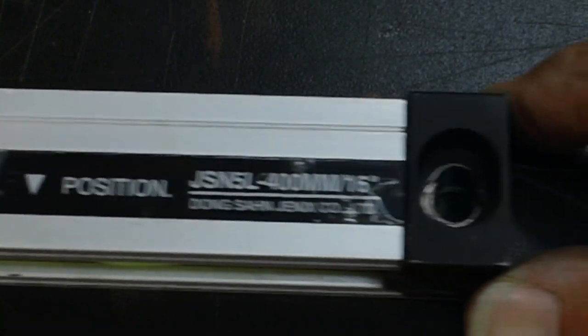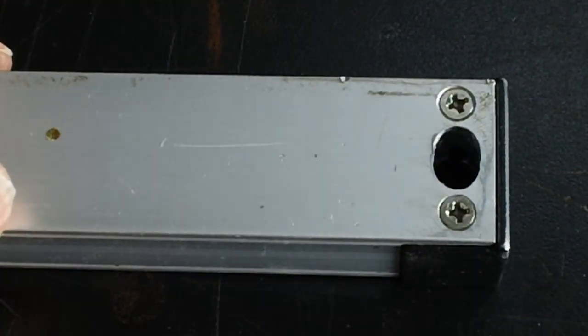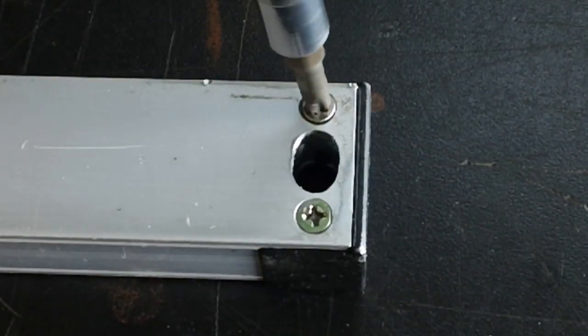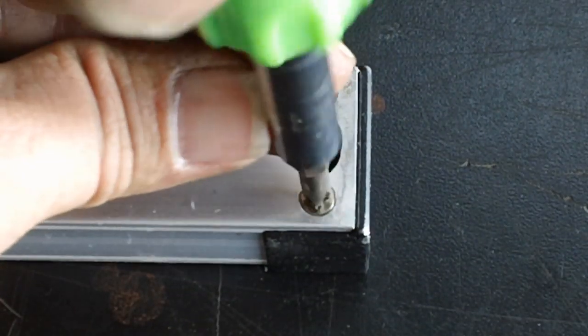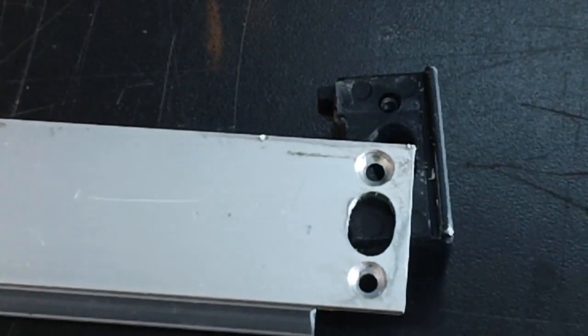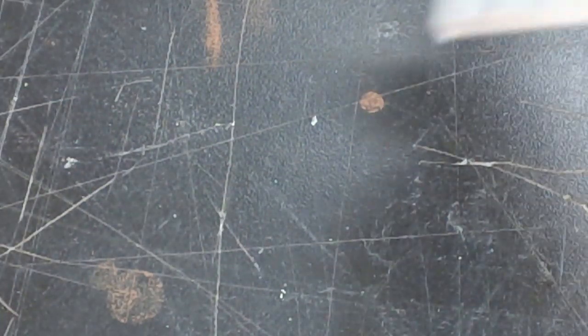I'll go down to the other end over here. Get these screws out. That block will fall off, just like that. Now, let's see if we can see down inside of there. I'm going to reposition the camera real quick to give you a better look.